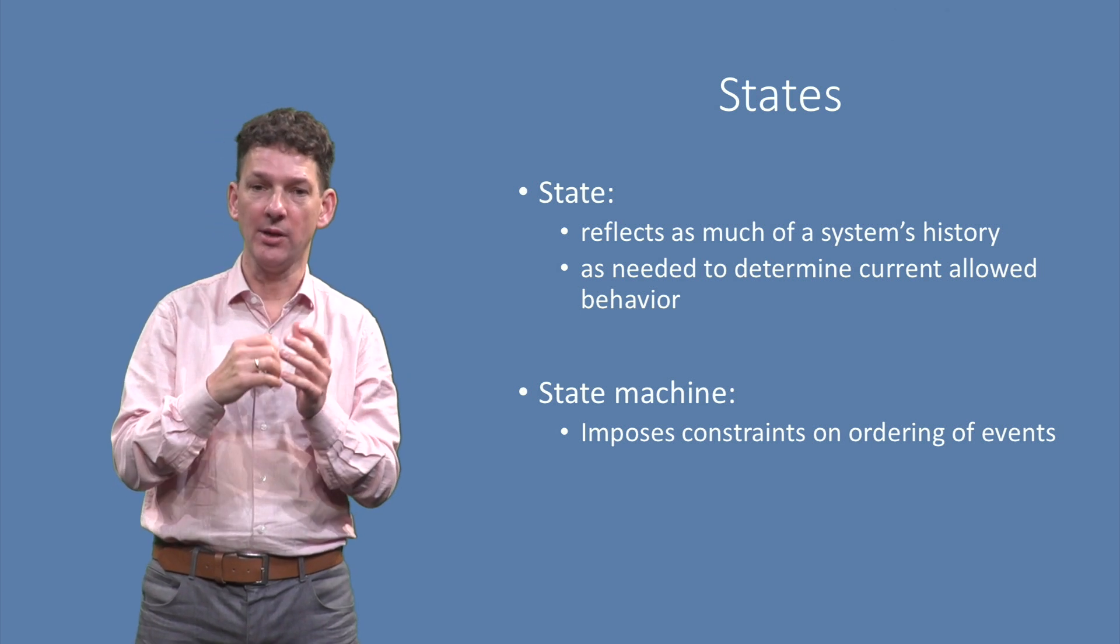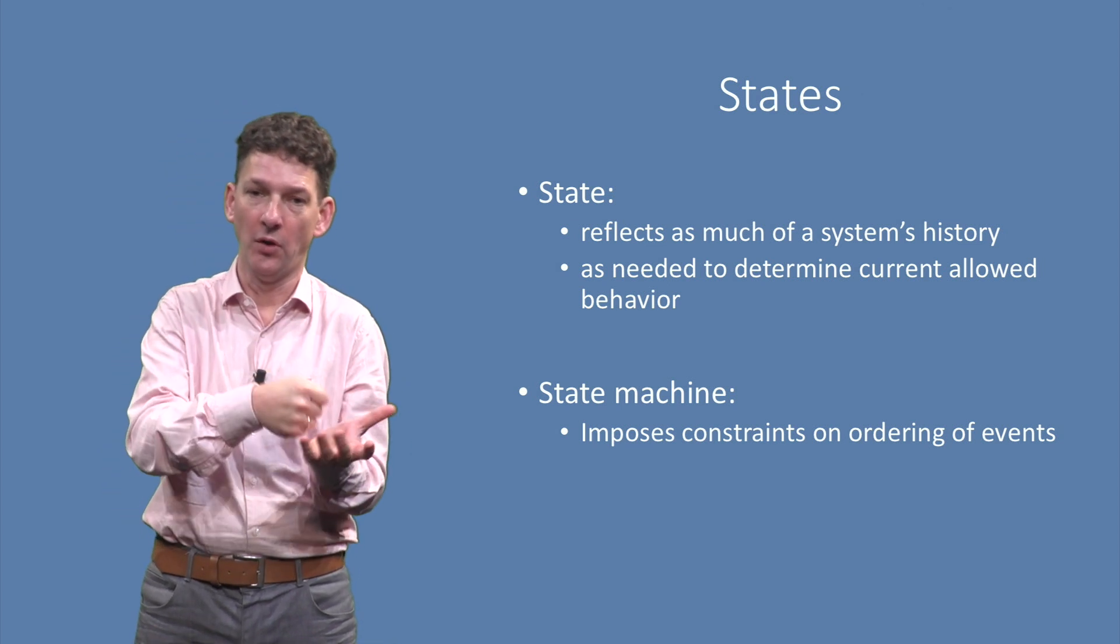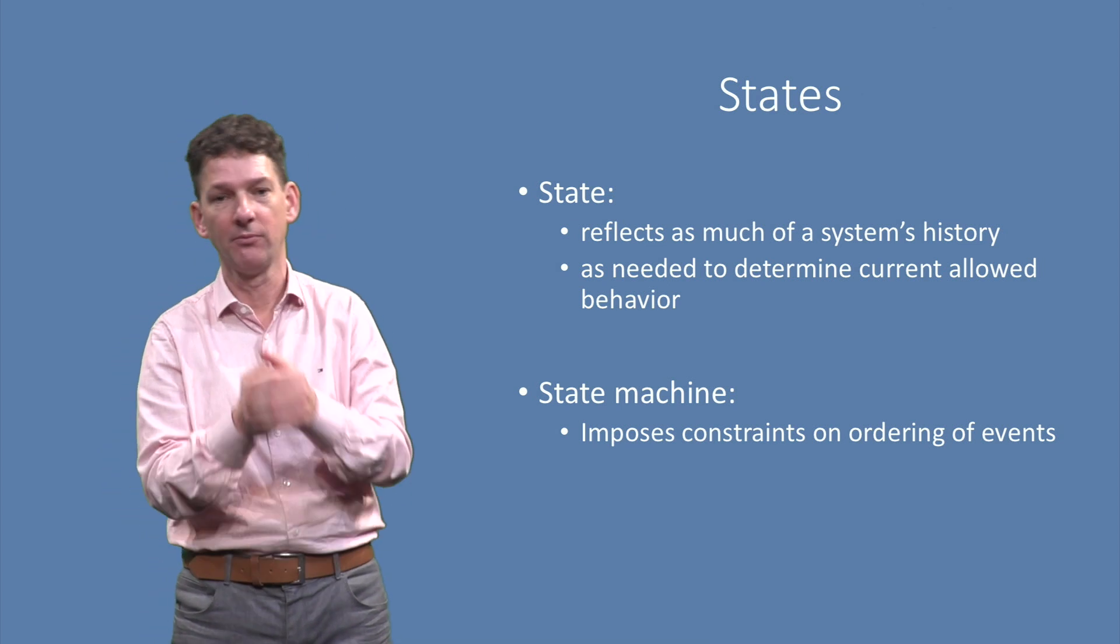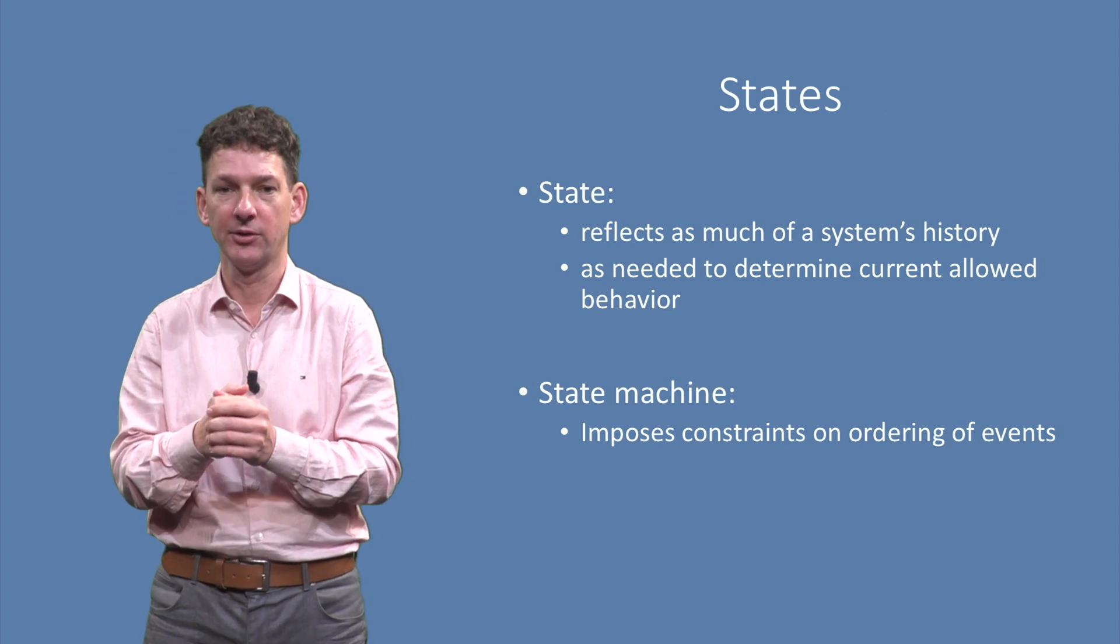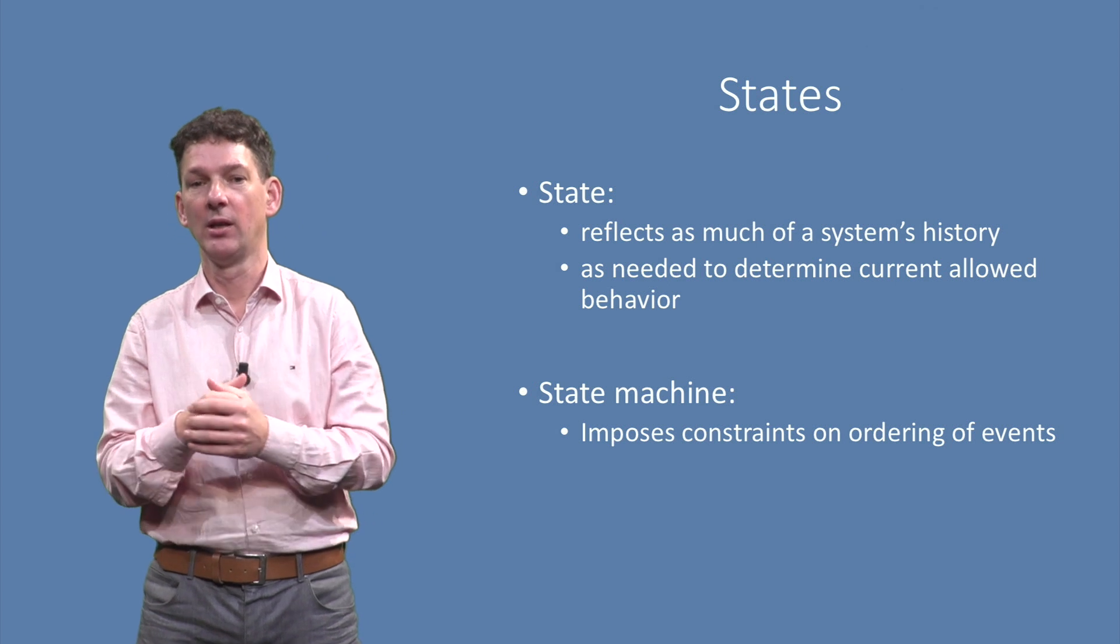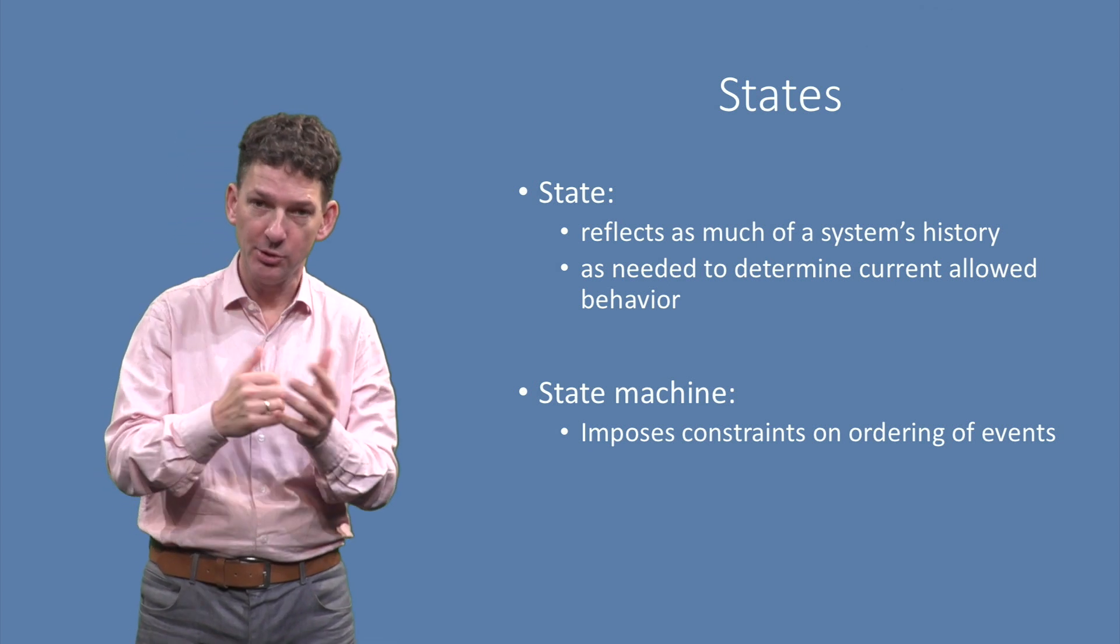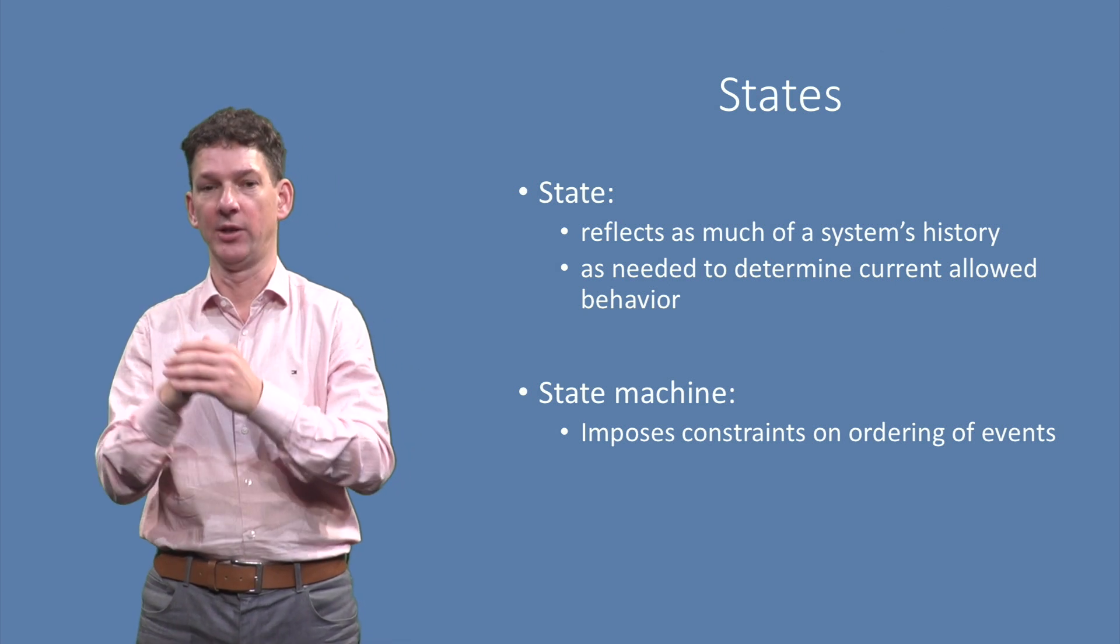In our example, it is impossible to enter a pin if a phone is switched off. A phone needs to be first switched on before a pin code can be entered. Such constraints on the ordering of events are very common in software systems. State machines allow us to model exactly these constraints.